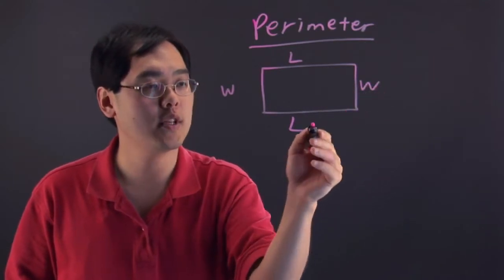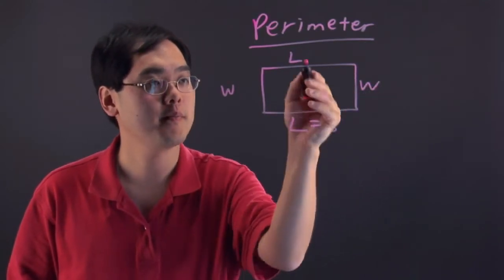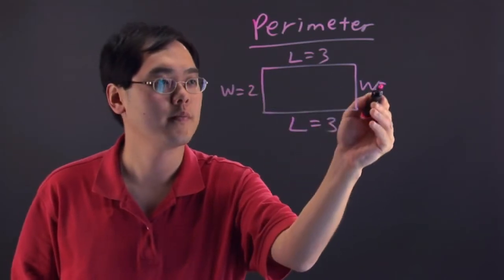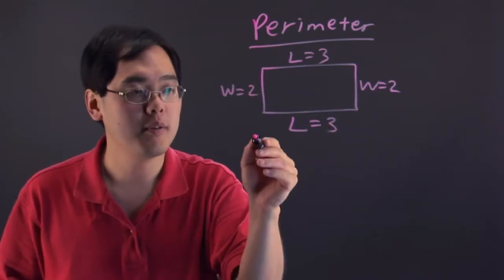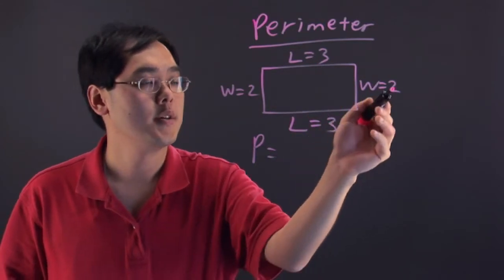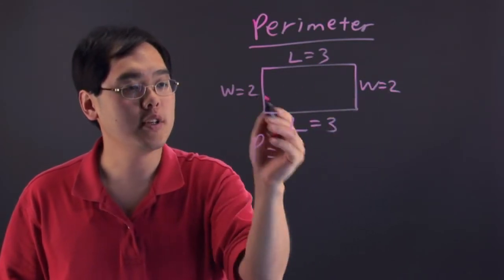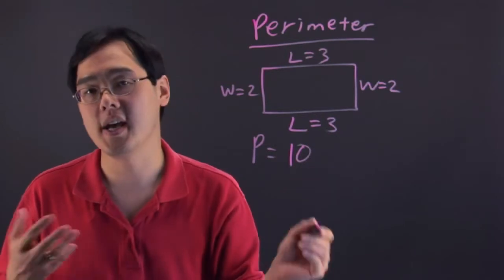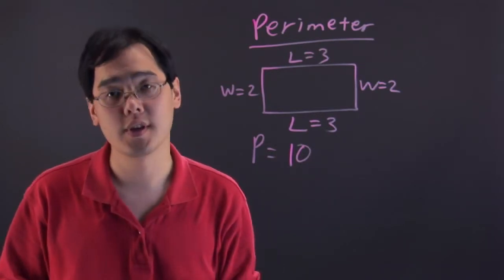Now let's suppose the length was 3 and the width was 2. So to find the perimeter, you simply add all the numbers together. 3 plus 3 is 6, 6 plus 2 is 8, 8 plus 2 is 10, and perimeter will be 10, whatever units you want to use.